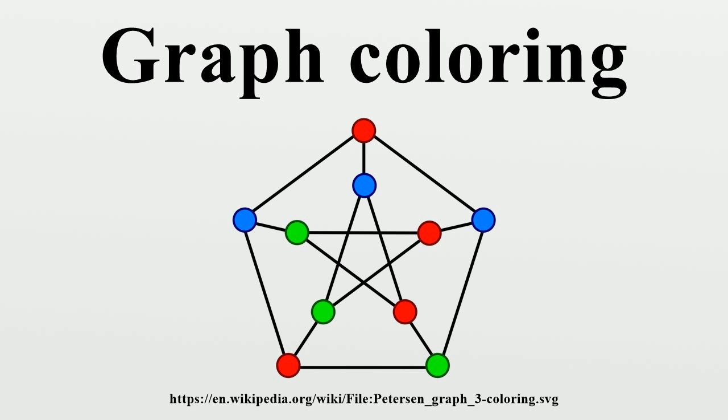A Tait coloring is a 3-edge coloring of a cubic graph. The four-color theorem is equivalent to the assertion that every planar cubic bridgeless graph admits a Tait coloring.